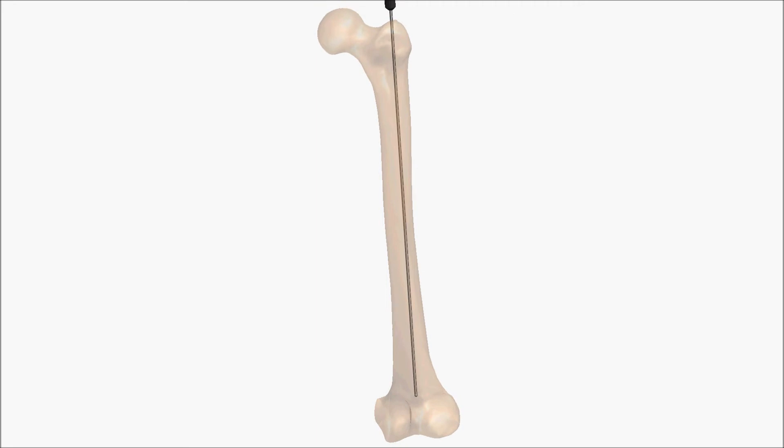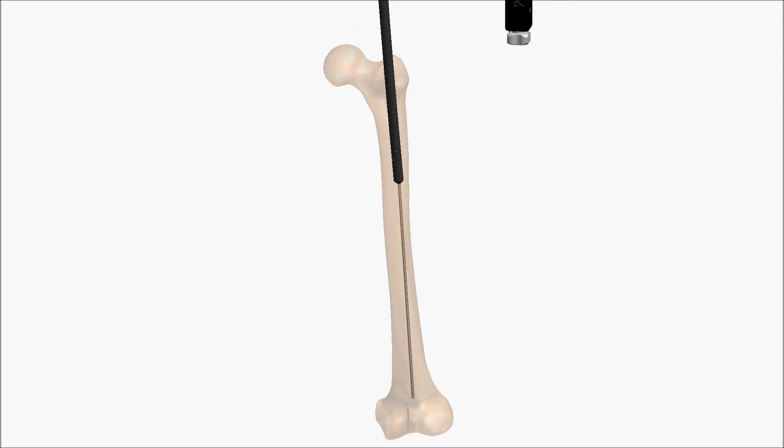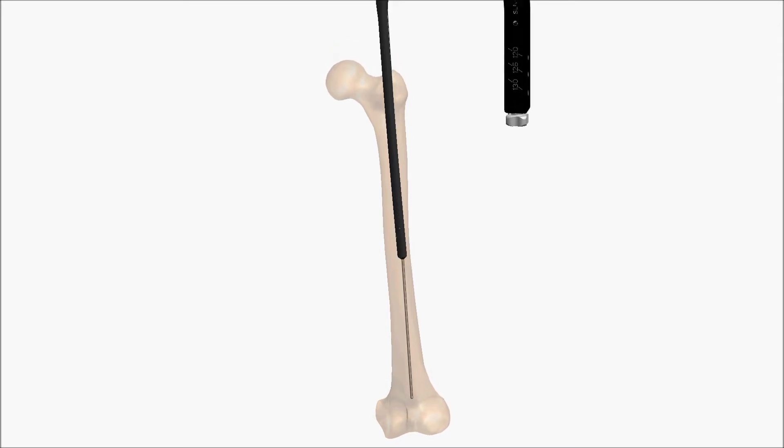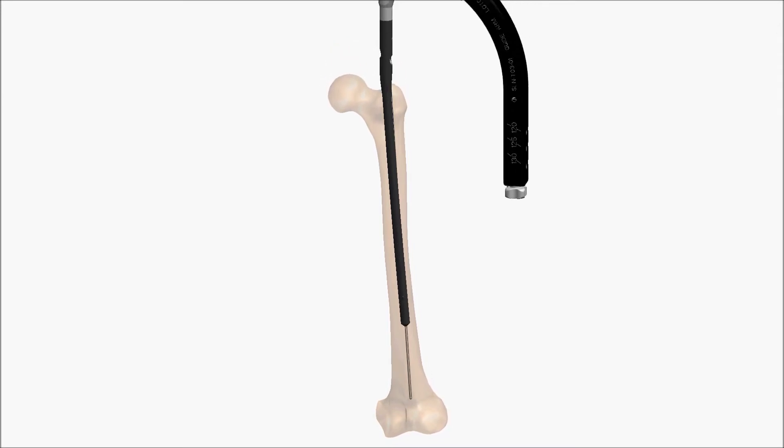With the outer sheath of the guide wire removed, insert the nail over the inner wire. Use steady pressure and gentle twisting motions to advance the nail.